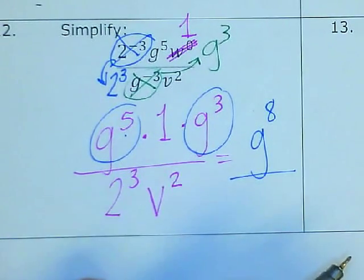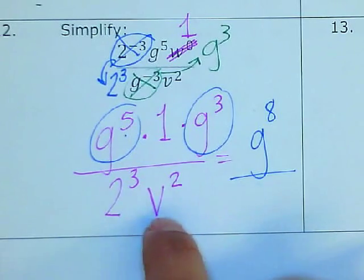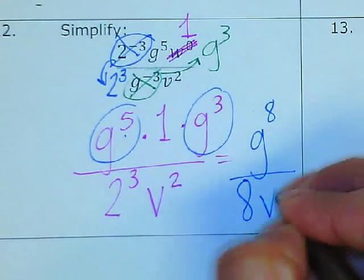At the bottom, 2 to the 3rd means 2 times 2 times 2, which gives me 8, and then v squared.